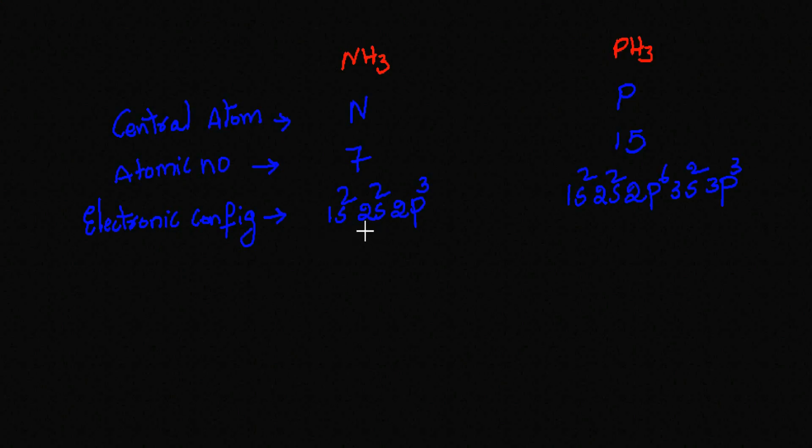In the NH3 molecule, nitrogen can be hybridized, and in the PH3 molecule, phosphorus cannot be hybridized. This happens although both the central atoms have five electrons in their valence shell. Before we learn the answer for this question, let's learn some basic information about the central atoms.